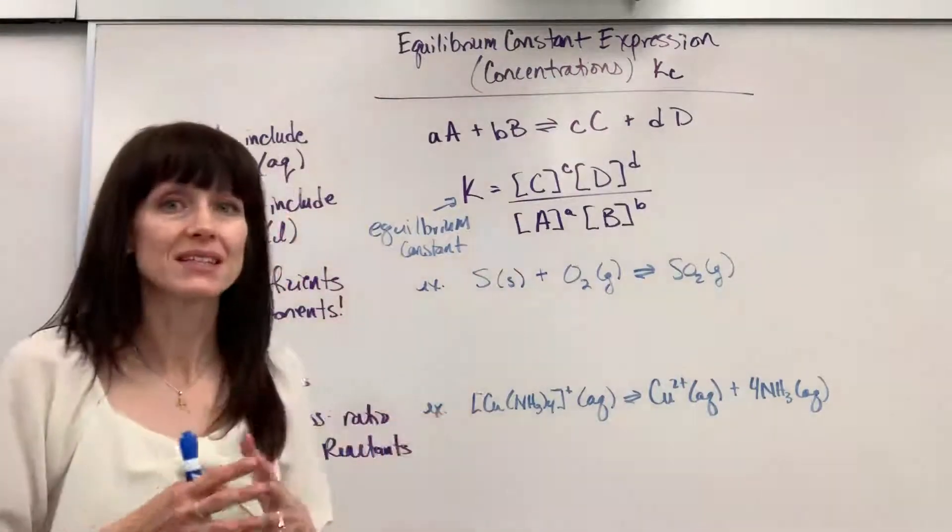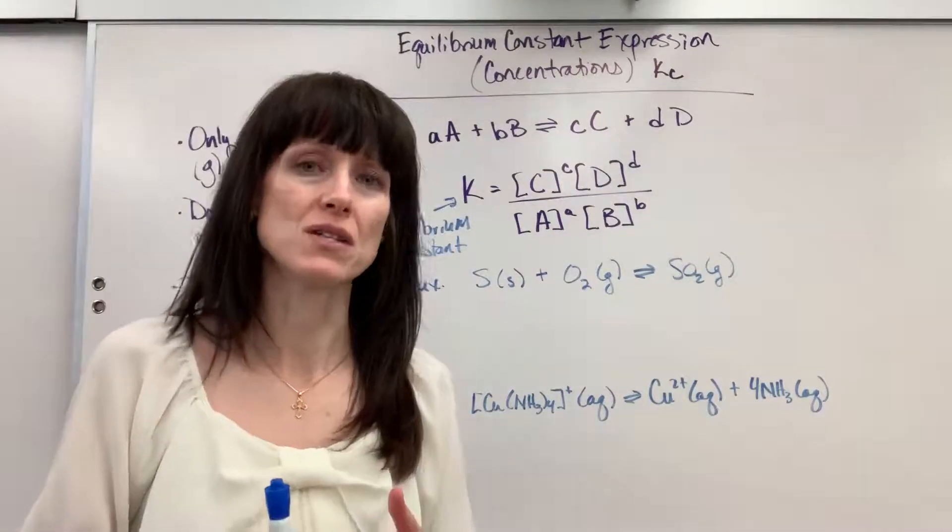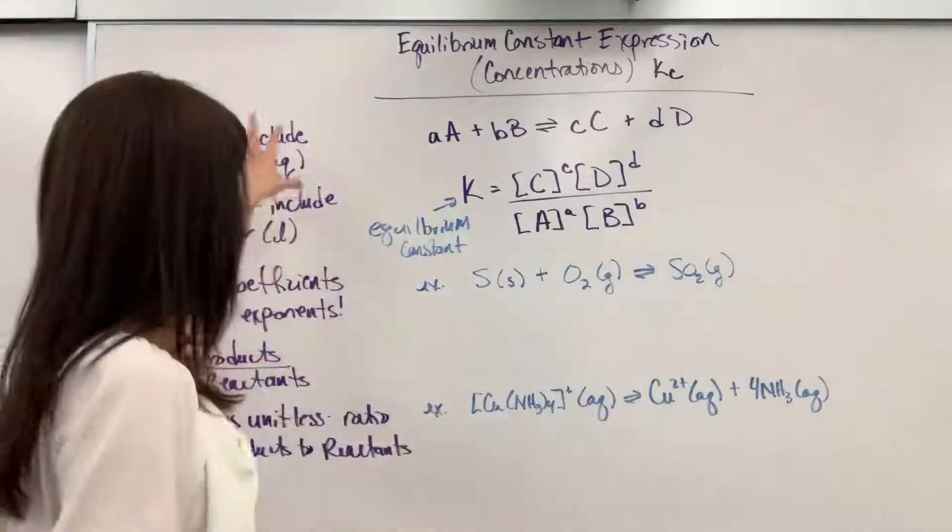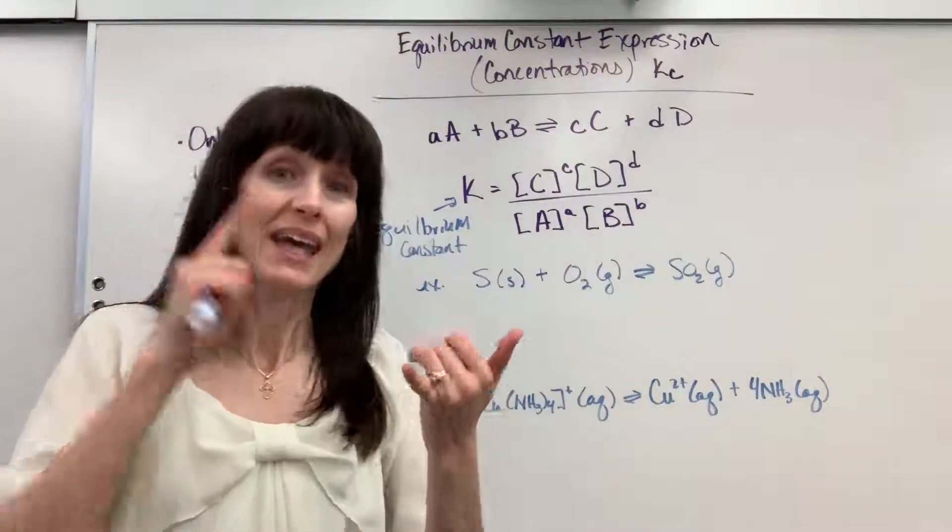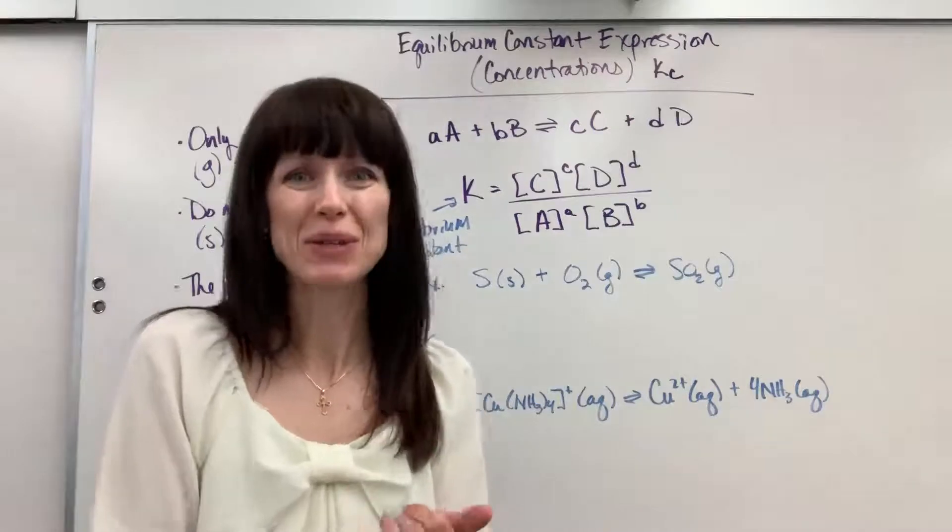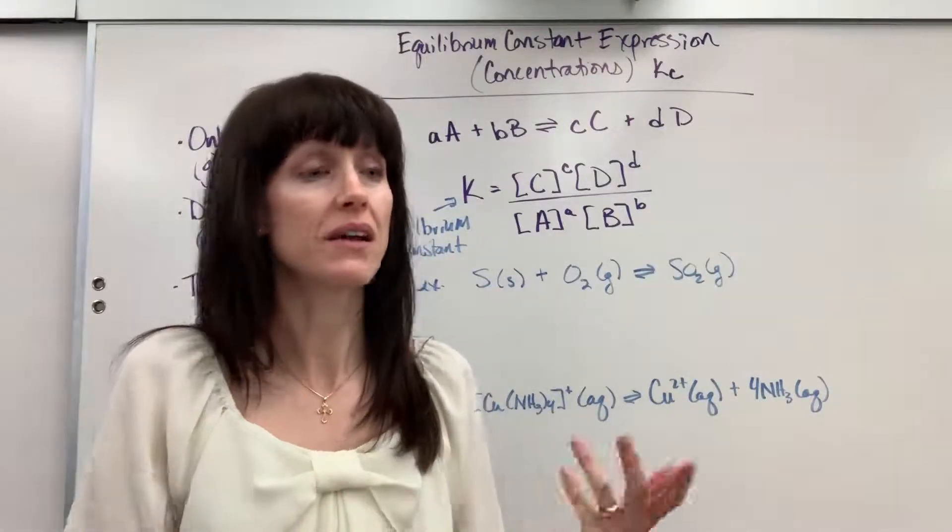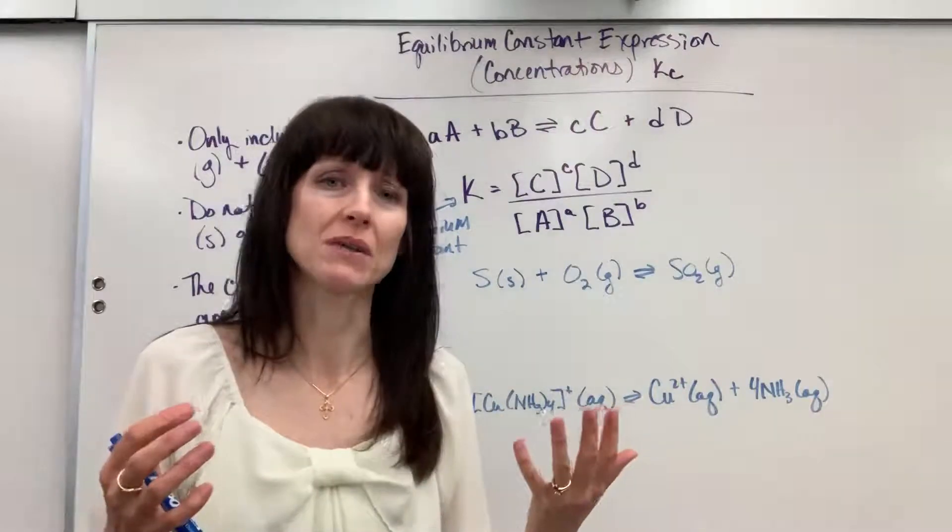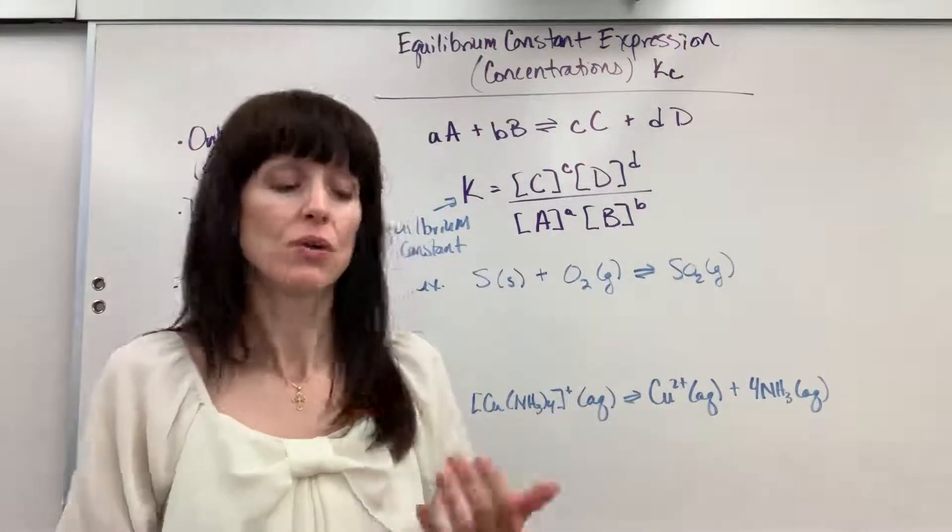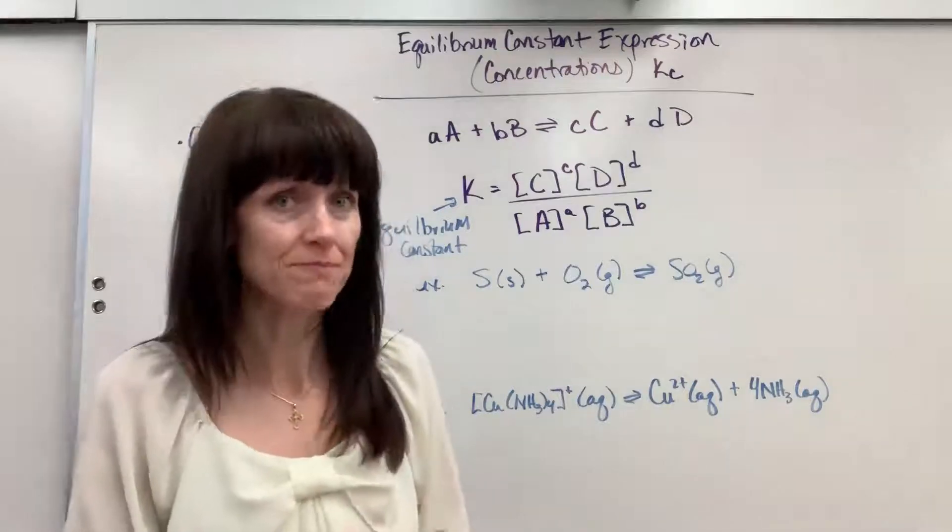This is highly significant, especially when we compare it to rate. So I've made some notes over here to help you keep straight between capital K, which is the equilibrium constant, and lowercase k, which is the rate constant. And honestly, sometimes you just have to read a problem contextually to know, are they talking about rate, or are they talking about equilibrium?